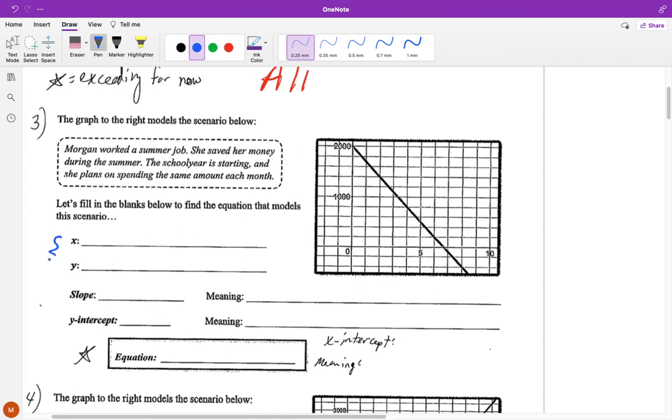So for this X and Y, it doesn't say anything like what is X equal to. It just says X and colon. So what we're saying or wanting there is, well, what does it represent? So it says the graph to the right models the scenario below. Let's fill in the blanks below to find the equation that models the scenario.